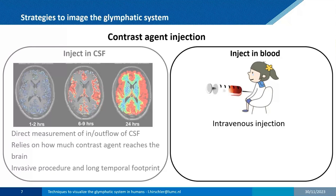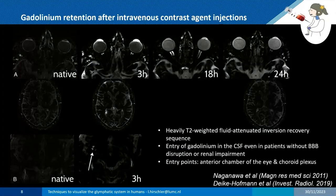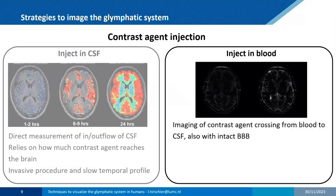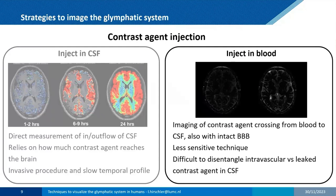An alternative is intravenous injection. The tracer is initially in the blood, but after some time it has been shown that even in healthy subjects there is exchange of gadolinium across the blood-brain barrier — at least in the CSF of the anterior chamber of the eye and some CSF areas. This technique is much less sensitive and it is difficult to disentangle the blood signal from the surrounding CSF, so it is more challenging to interpret.